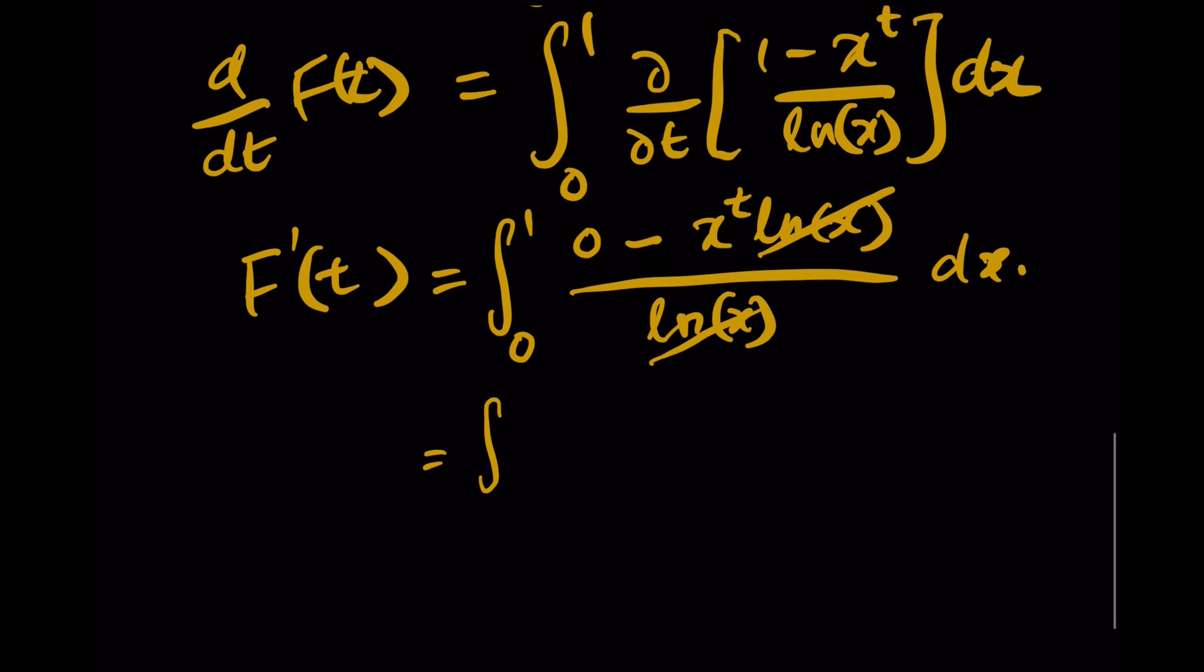And we have integration from 0 to 1 of negative x^t dx. So the differentiation over dt is done.